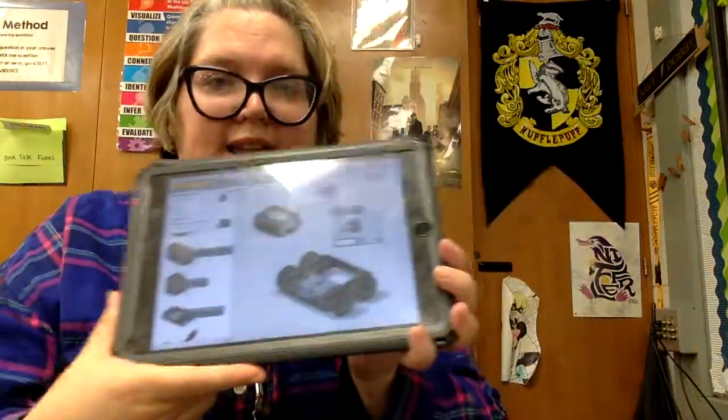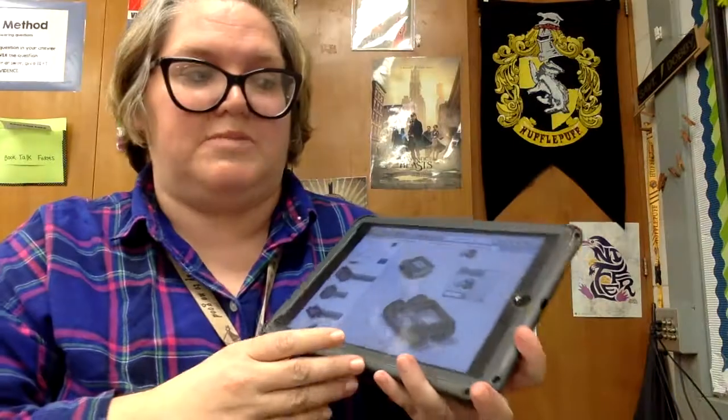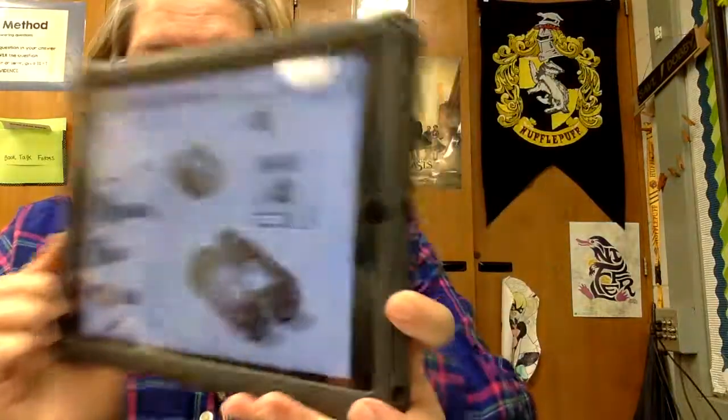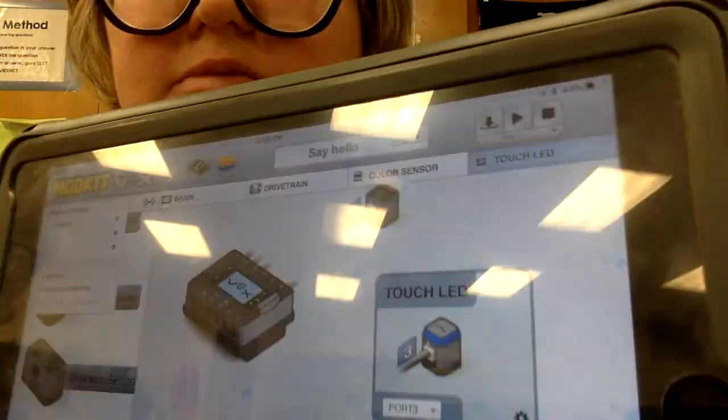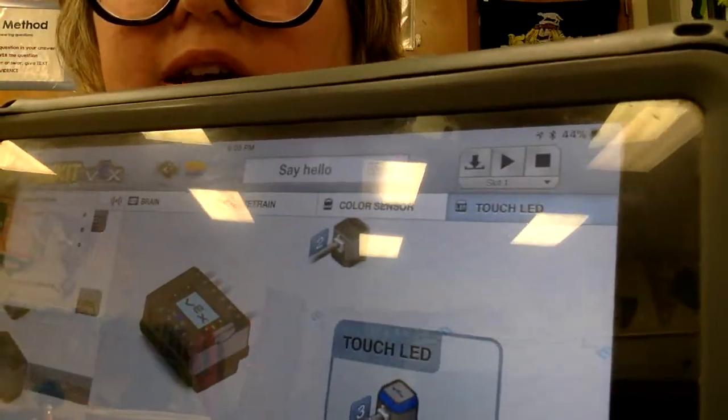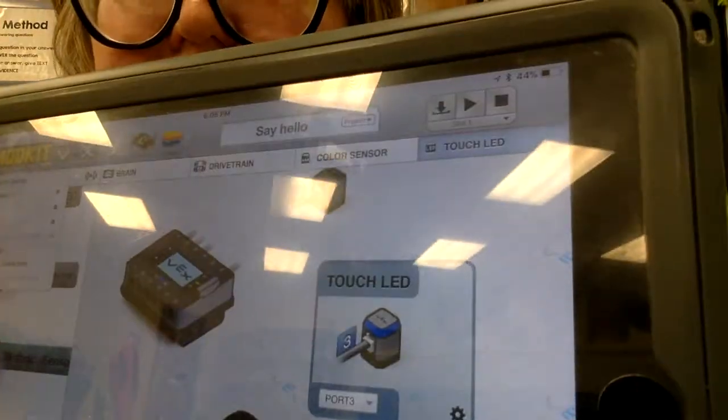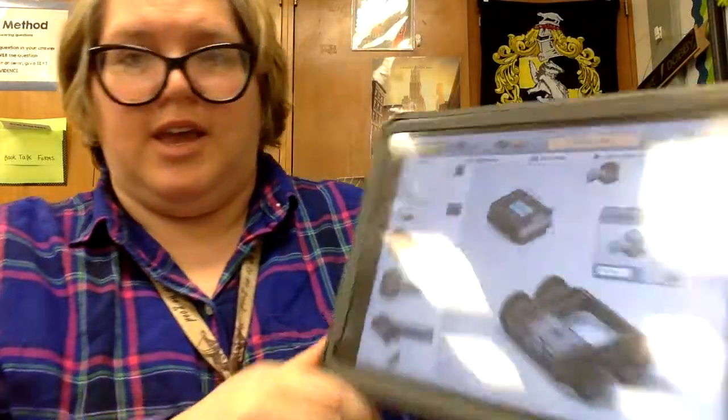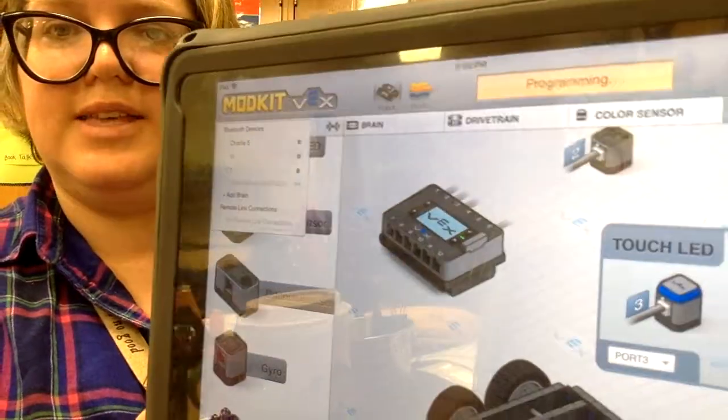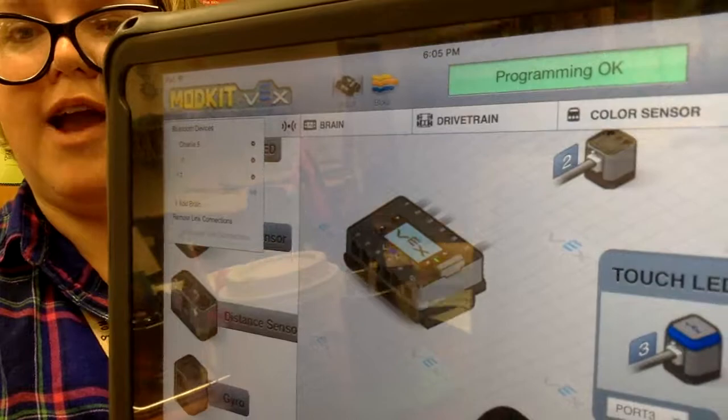So now my robot is connected and I can download code onto my robot's brain. So I have my Say Hello program already pulled up here. So I press the download button which is the little arrow pointing down. I've got it that it's going into slot 1. I press download. It'll say programming. See that? Programming. Programming. Okay, so it's there.